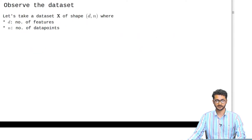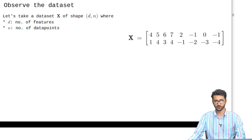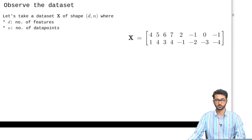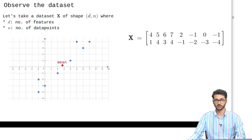First, let us observe this dataset. The dataset is of shape d by n, where d is the number of features and n is the number of data points. So we have 8 points with each point having 2 features. The first point is (4, 1), the next one (5, 4), and so on. If we look at it on a graph, we can see that the data points are not centered.